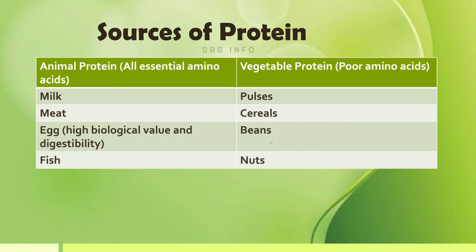Now let us look at the sources of proteins. We can get protein from animal sources and plant or vegetable sources. Compared to plant proteins, animal proteins are superior because they contain all essential amino acids.